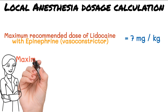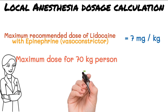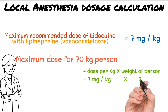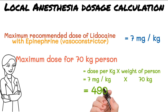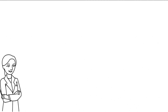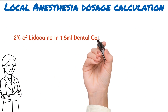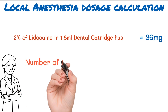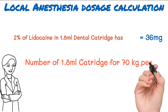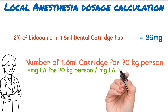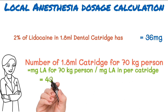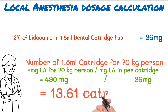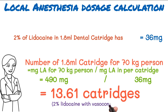The maximum recommended dose of lidocaine with vasoconstrictor is 7 milligrams per kilogram. For a 70 kilogram person, the maximum dose is 7 mg/kg multiplied by 70 kg, equal to 490 milligrams. Since a 1.8 milliliter cartridge of two percent lidocaine contains 36 milligrams, the number of cartridges is 490 divided by 36, equal to 13.61 cartridges.